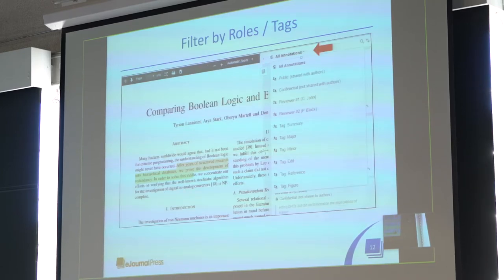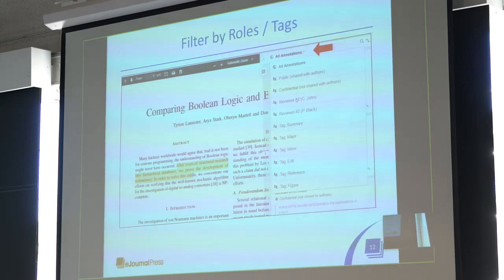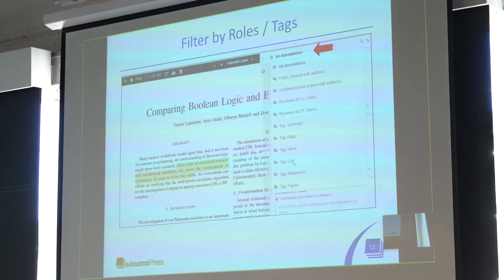Sometimes that list of annotations becomes very long, so you want to filter. You can click on the All Annotations link at the top and select a filter: just show me Reviewer One's comments, show me the major comments, show me the edits, and so forth.